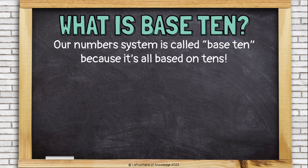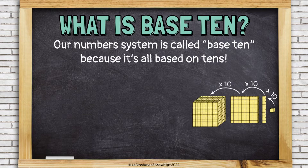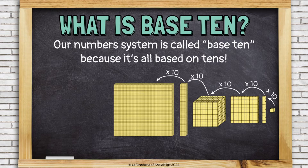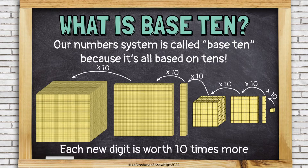Our number system is called base 10 because it's all based on tens. Each new digit is worth 10 times more than the digit that came before it.